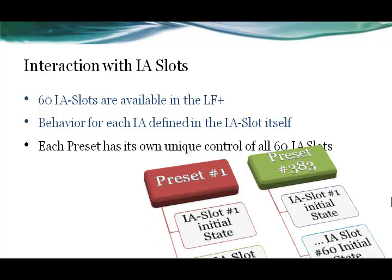Each preset has its own unique control over all 60 IA slots. The initial states you define for preset number one could be different than those defined for all other presets. So every preset can determine the initial state of the IA switch and the functionality of all 60 IA slots. When a preset is triggered, it will automatically set the IA slots to that specific initial state.